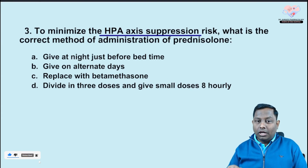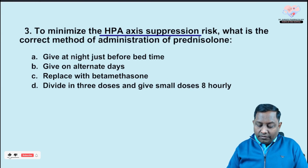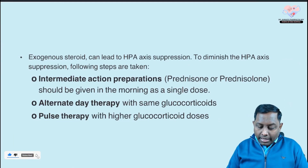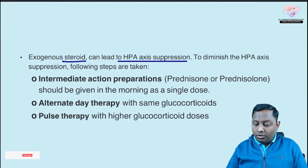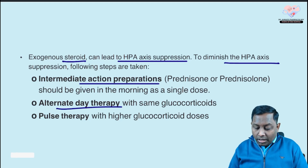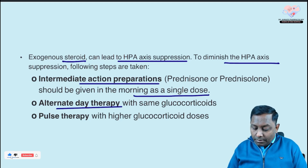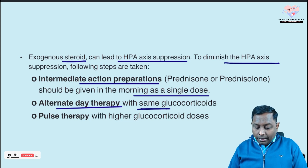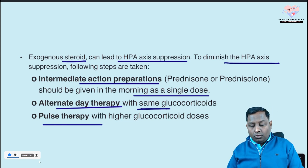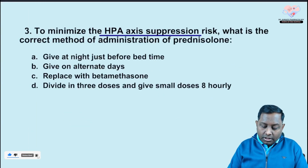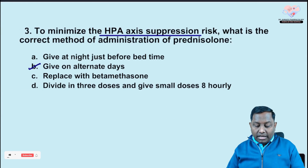The next question: to minimize HPA axis suppression, what is the correct method of steroid administration? This is an FMGE question taken directly from Goodman & Gilman. To diminish HPA suppression, intermediate-acting preparations should be given in the morning as a single dose on alternate days — using the same glucocorticoid. Pulse therapy uses higher glucocorticoid doses on alternate days.